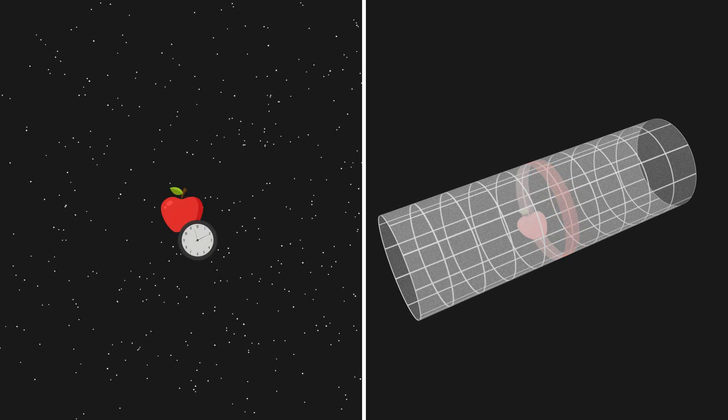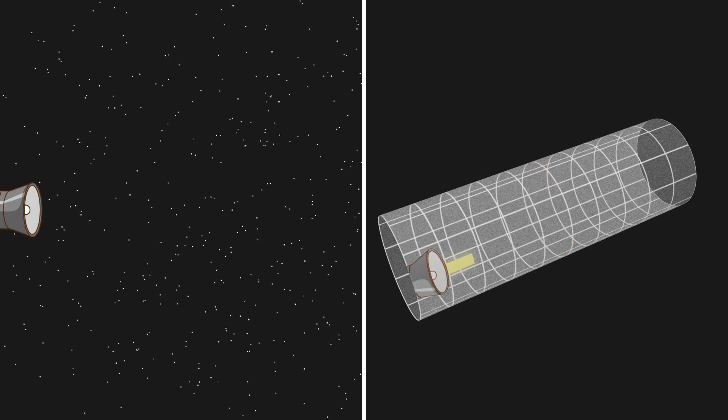A stationary object in this region moves around the cylinder because it continues to progress through time even though it doesn't travel through space. Meanwhile, light beams which only move through space travel straight down the cylinder.